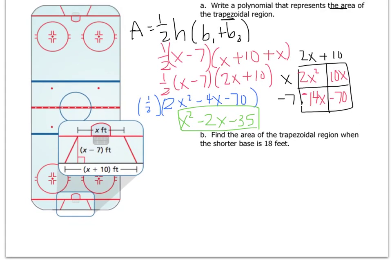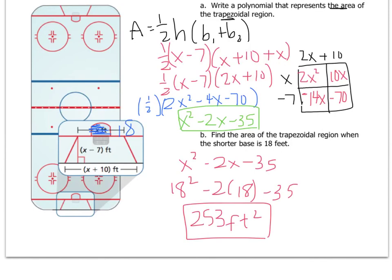In part B, we have to find the area of the trapezoidal region when the shorter base is 18. So now they're telling us that this x is 18 right here. So luckily that's x, and wherever I see an x in my new area polynomial, I will plug in 18. So 18 squared minus 2 times 18 minus 35. When I do that, I get 253 square feet. If you have any questions, write them down and ask me when you come to class.